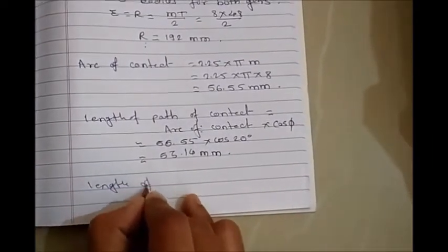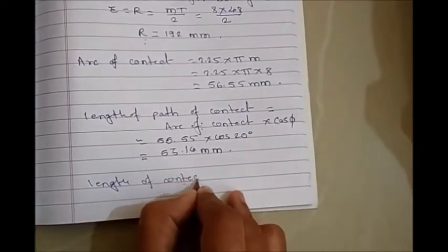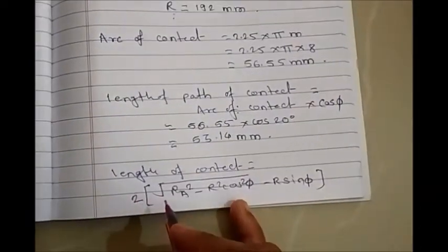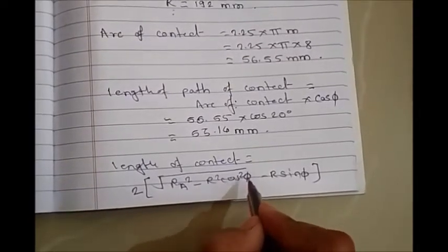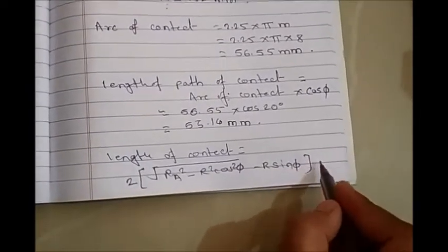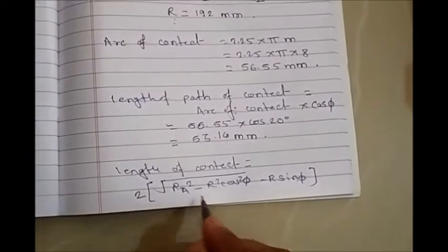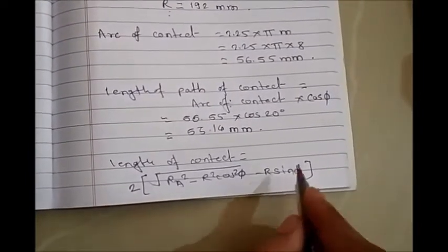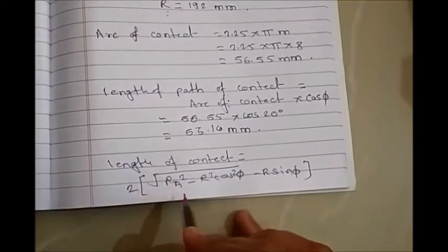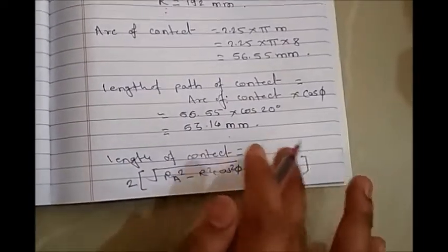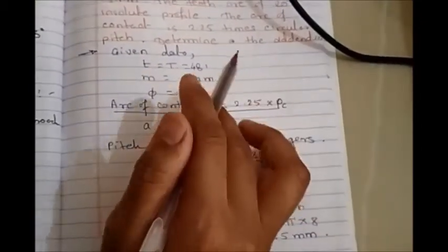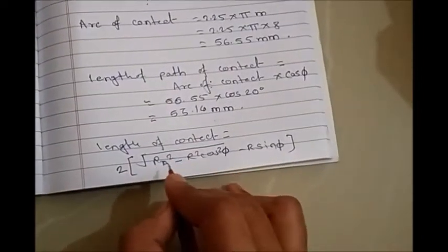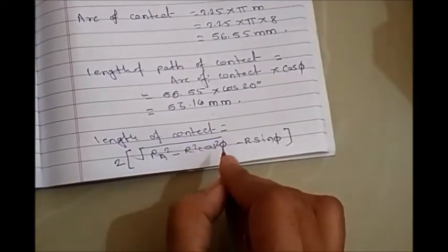Now let's use the formula: length of contact equals square root of... The formula is square root of Ra squared minus R squared cos squared φ. But both small r and capital R are the same because number of teeth for both gears is same, so we multiply by 2 into bracket square root of Ra squared minus R squared cos squared φ minus R sin φ.